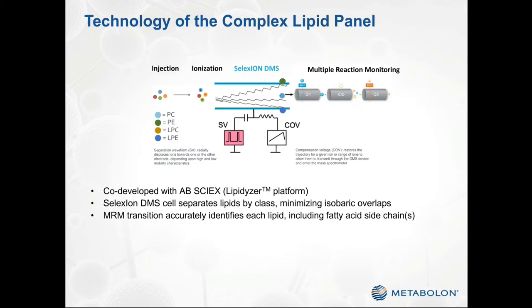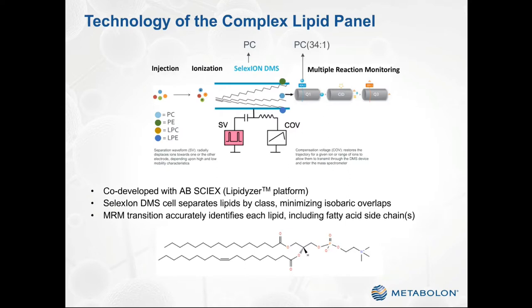After the DMS-based filtering, lipids enter the multiple reaction monitoring, or MRM, phase of the analysis, in which both the intact mass of the lipid and the mass of a characteristic fragment are measured, permitting the identification of the fatty acid side chain or side chains of the lipid. For example, for the lipid we looked at previously, the differential mobility separation would conclusively identify it as a phosphatidylcholine. The intact mass would give us the sum composition, PC34:1. And the fragmentation would allow us to assign the specific identity of the lipid as phosphatidylcholine 16:0/18:1.